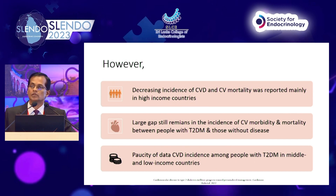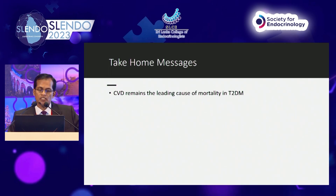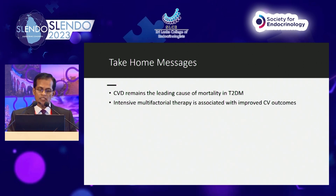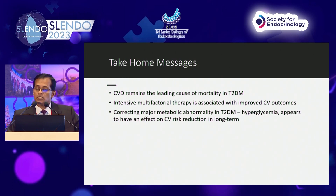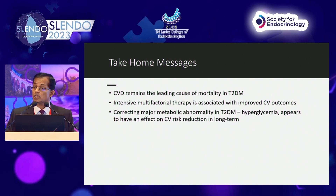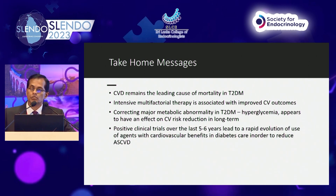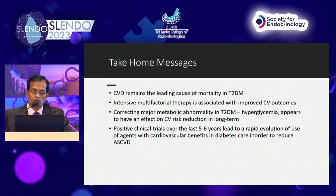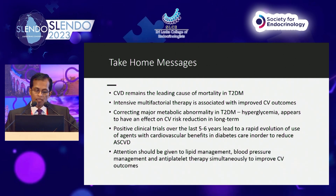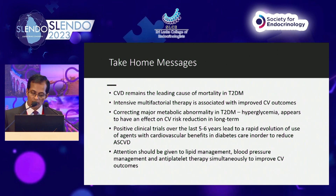Take home messages: CVD remains the leading cause of death in type 2 diabetes. Intensive multifactorial therapy is associated with improved cardiovascular outcomes in diabetes. Correcting major abnormalities in type 2 diabetes — including hyperglycemia — has an effect on long-term cardiovascular risk reduction. Positive clinical trials over the last five to six years have led to the rapid evolution of new agents with cardiovascular benefits. Attention should be given simultaneously to lipid management, blood pressure management, and antiplatelet therapy to reduce cardiovascular outcomes in diabetes. Thank you.